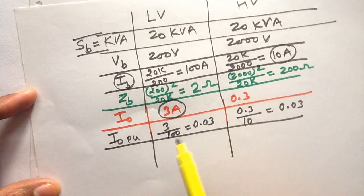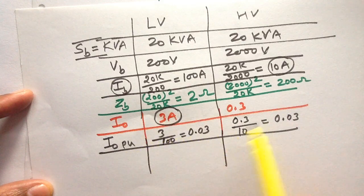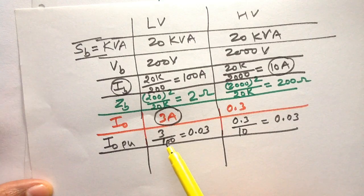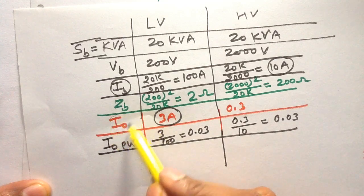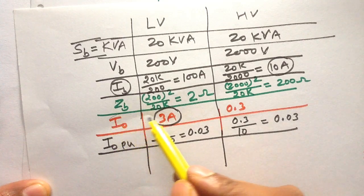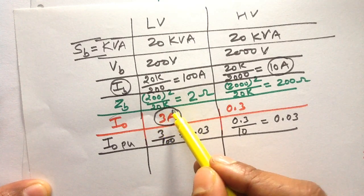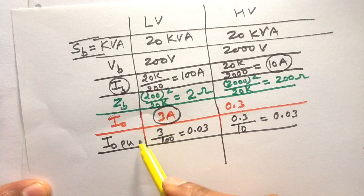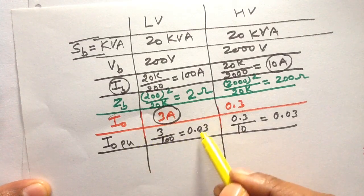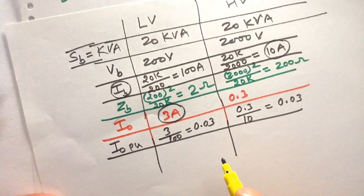In the case of the transformer, the current in per unit system will remain the same regardless of which side you refer to. This is the benefit of using the per unit system. If you take the actual values, the current on LV side and the current referred to HV side will be different. But in the per unit system, the current referred to LV side and referred to HV side will be the same.